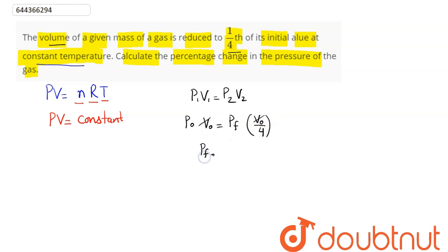Now the question is asking for percentage change in pressure. So we can say percentage change in pressure can be written as (final pressure - initial pressure) / initial pressure × 100%.